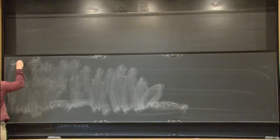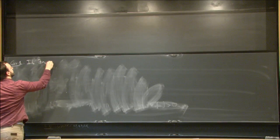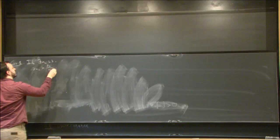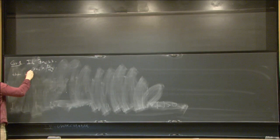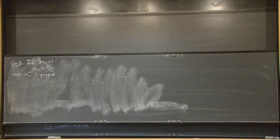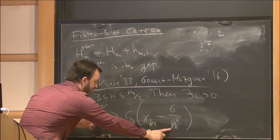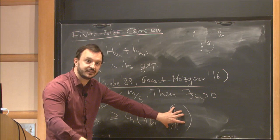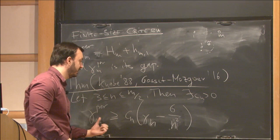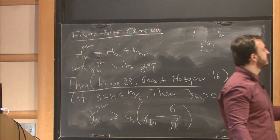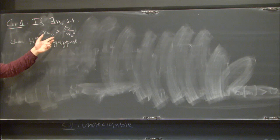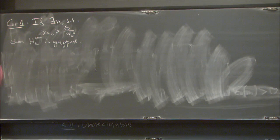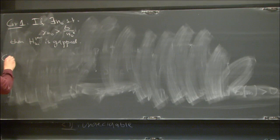Here's a corollary: if there exists some N_0 such that the open-system gap at N_0 exceeds the threshold, then the system is gapped. Because for that fixed N_0, we get a uniform positive lower bound on the periodic gap for all M. This is something you can check with a computer — if N_0 is 3, 4, 5, 6, 7, just check it. If the gap beats the threshold, you know the system is gapped for all N.